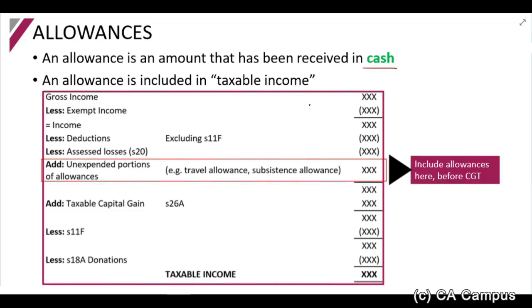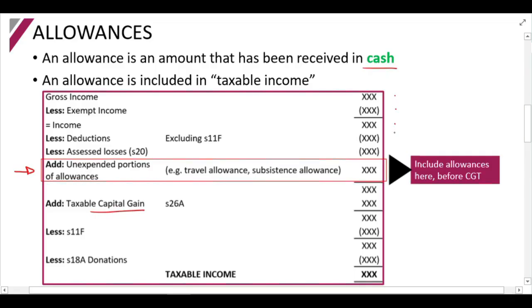When you receive an allowance, section 8 indicates that the amount is included in taxable income. It is not included in gross income - it is included in the taxable income calculation. If you look at your tax framework, you include it below gross income less exempt income less deductions less assessed losses from section 20, and then you add your allowances.